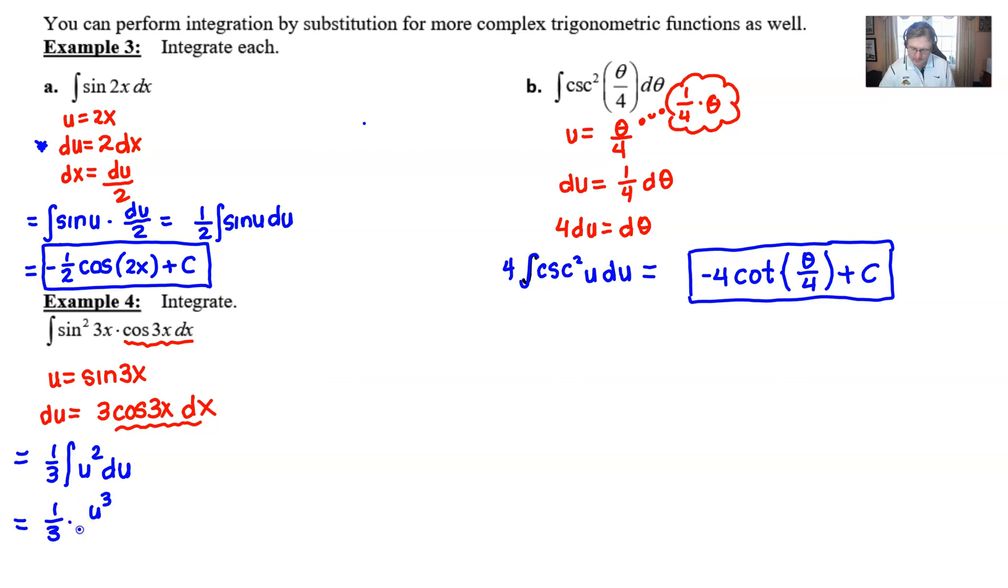And then when we integrate this, we have one-third times u to the third over three plus c. And if we back substitute, one-ninth, and then I'll rewrite my u as the sine of 3x, and I'll put that cubed probably in that little spot there. And there's our final answer.